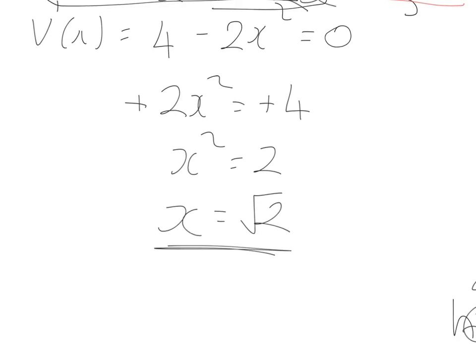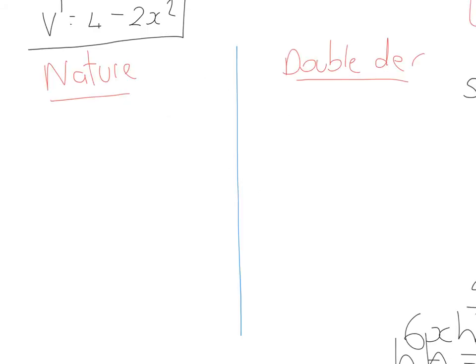So I'm going to start off with the nature table method. So I want to prove that this is a maximum, and the stationary point occurred at √2. So a number approaching √2 could be 1, a number moving away from √2 could be 2. They're then subbed into the differentiated function.